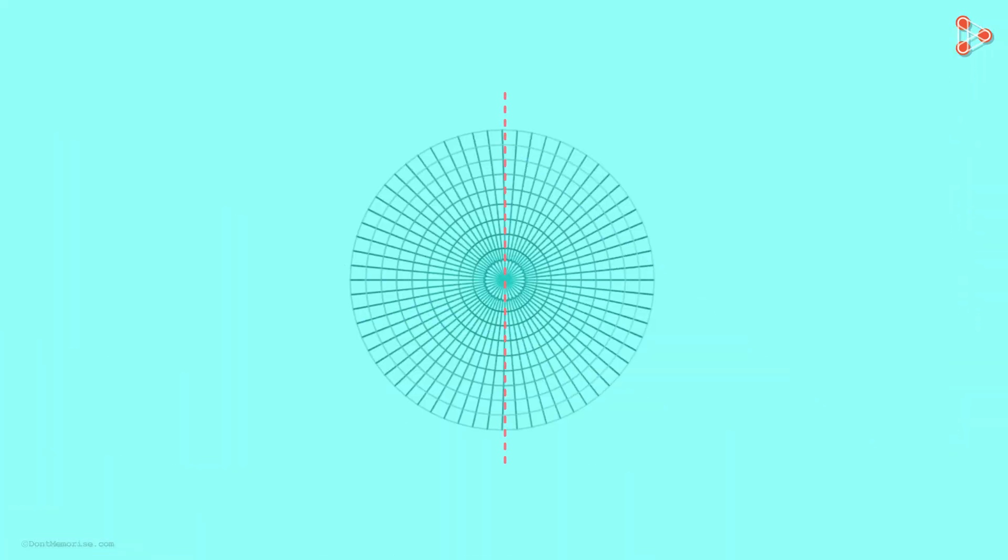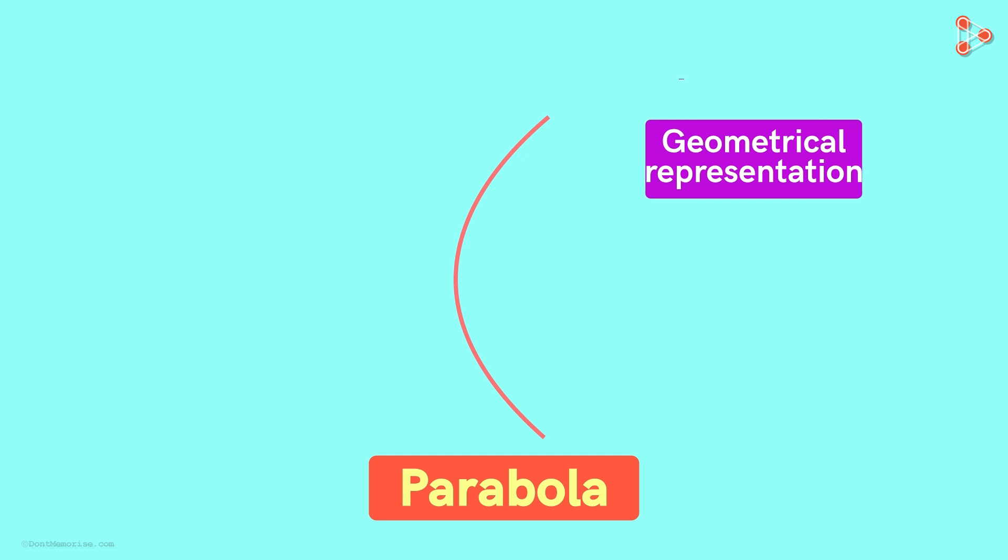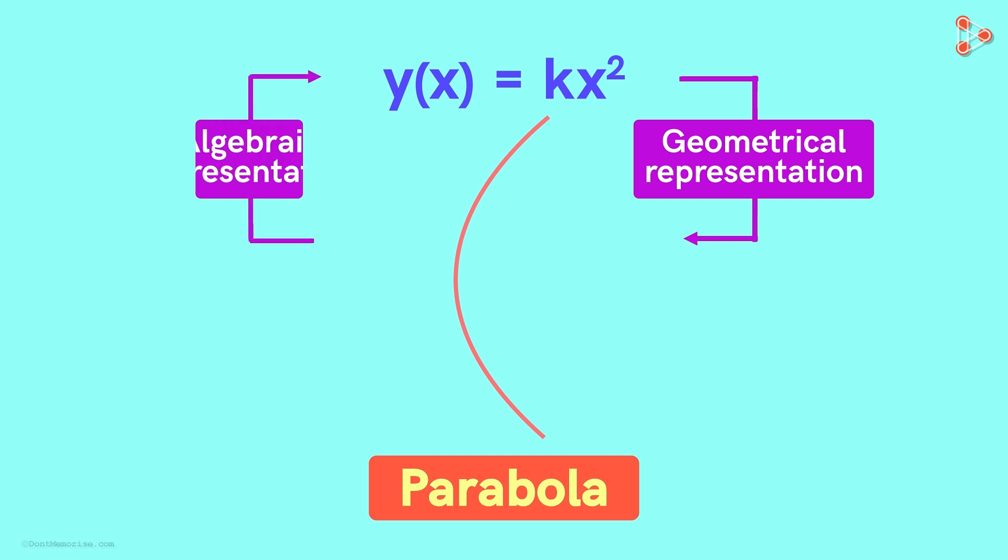Now look at the cross section of the curved surface. Notice that the whole surface is made up of curves which look like this. We have seen earlier that this type of a curve is called a parabola. And here is the connection. This curve is the geometrical representation of this equation. Or we can say that this equation is the algebraic representation of this curve.